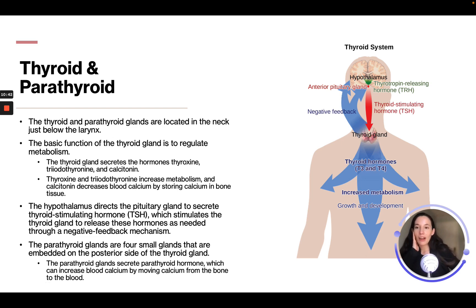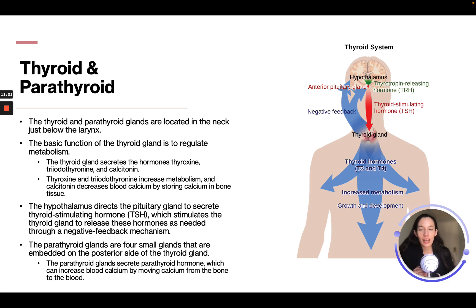The thyroid and parathyroid glands are located in the neck, just below the larynx. The basic function of the thyroid gland is to regulate metabolism. The thyroid gland secretes thyroxine, triiodothyronine, and calcitonin. Thyroxine and triiodothyronine increase metabolism, and calcitonin decreases blood calcium by storing calcium in bone tissue. The hypothalamus directs the pituitary gland to secrete thyroid-stimulating hormone, which stimulates the thyroid to release these hormones as needed through a negative feedback mechanism.